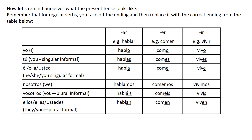The endings are very similar. Yo is O for all three. There's a slight change in the tú form because our AR verb takes AS, whereas ER and IR take S — so comes, vives, but hablas. Same thing in our he and she form: we've got A for AR and E for ER and IR — so habla, come, vive.